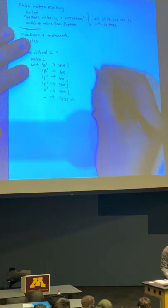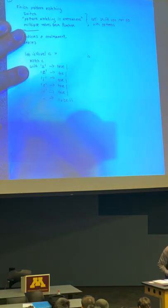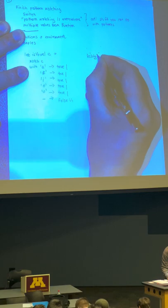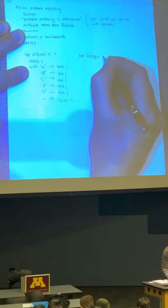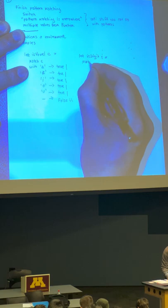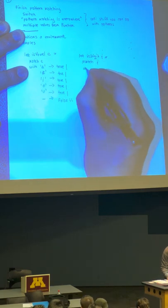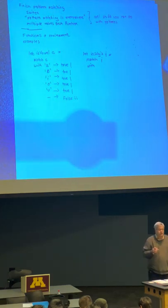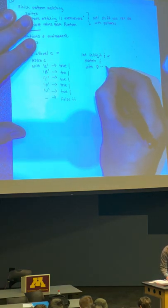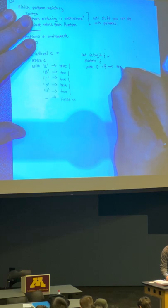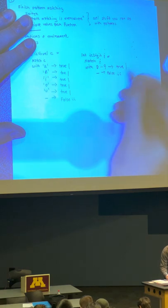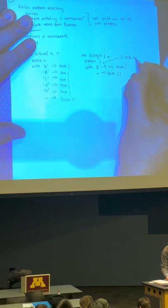You can also do something sort of related. Let's say I want to write a function called `isDigit` that takes an integer. A digit is just an integer from 0 to 9 inclusive. So I can write `0..9` and have that return true, and anything else return false. Note that it's two dots, not three.